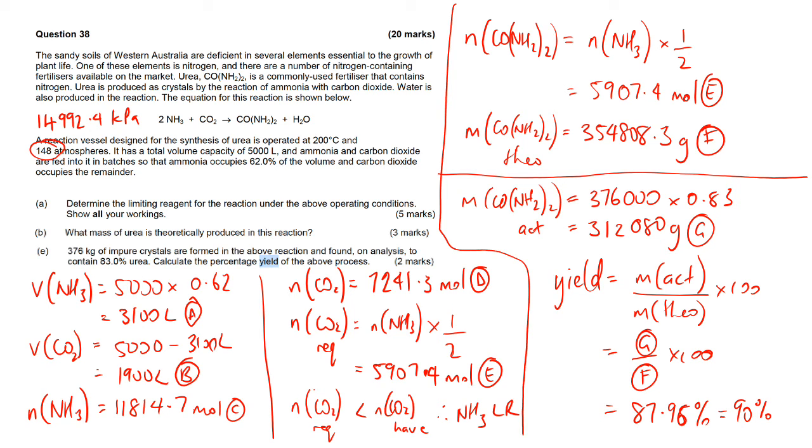Here I've got my 0.83 as the percentage of urea in the impure crystals. Always remember to convert between kilograms and grams to make sure that you've got the right things. Then you work over the yield because you've been given the actual, you have to do a little bit of calculation for it and then you've solved for the theoretical.